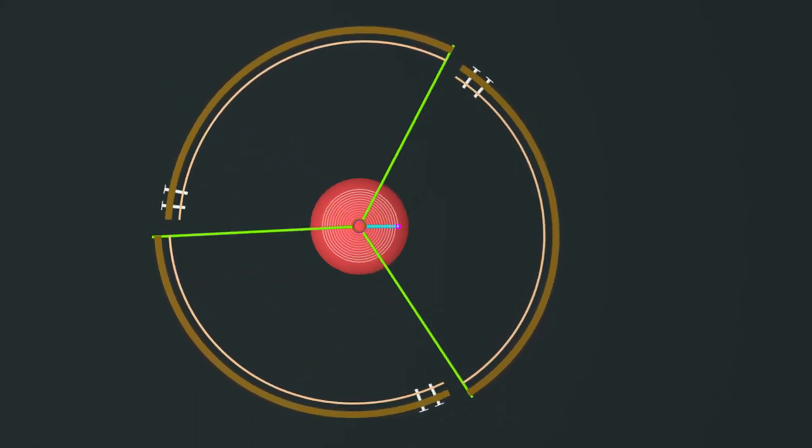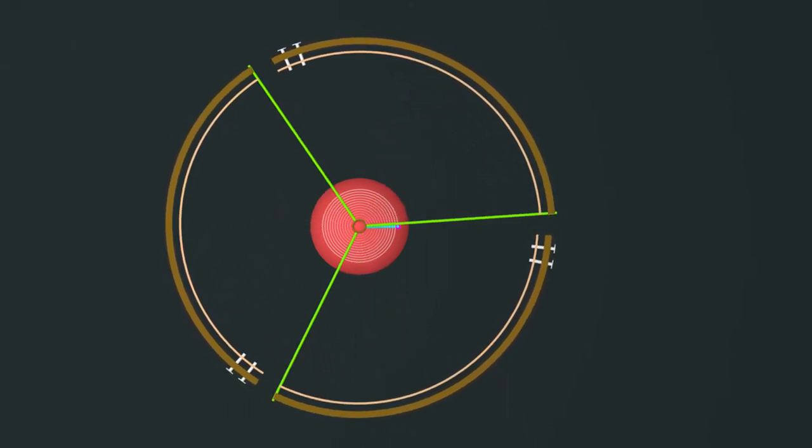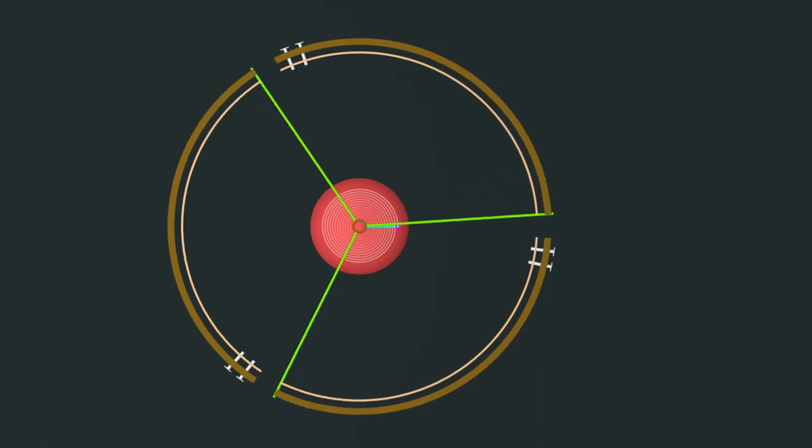This balance wheel is used in the watch to give correct time in all ambient conditions.